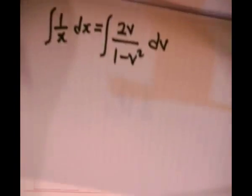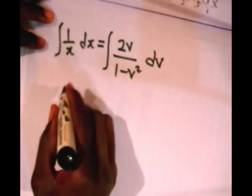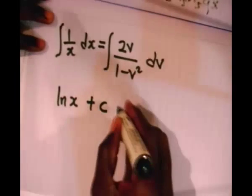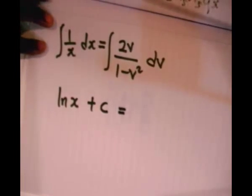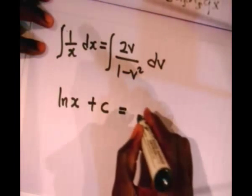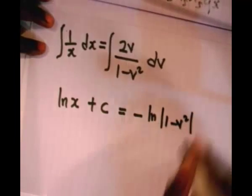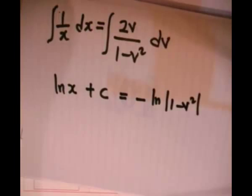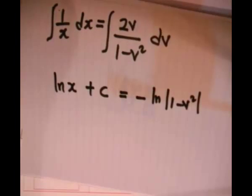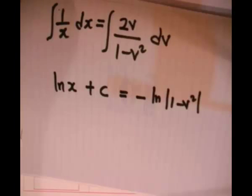Since the variables are separated, we integrate both sides. The left side gives ln(x) + c. For the right side, integrating 2v/(1 − v²) dv gives −ln(1 − v²). We are close to the final answer, but we have the variable v which must be replaced. Since y = vx, we have v = y/x.